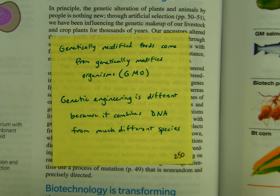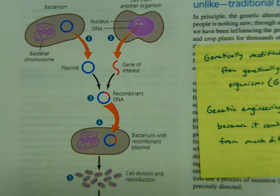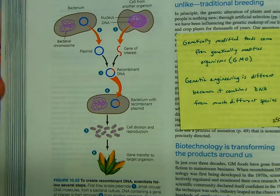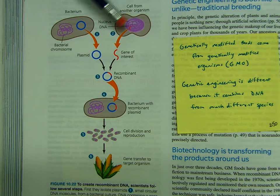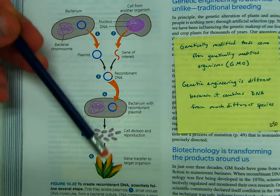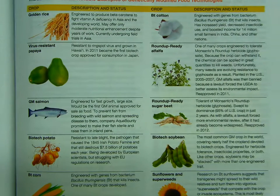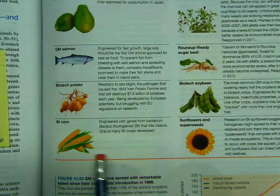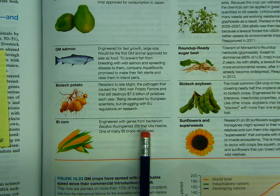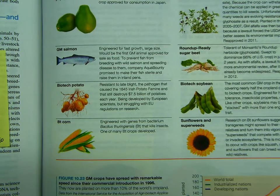Genetic engineering is different because it combines DNA from very different species. For example, in this picture you can see it starts with a bacteria cell and a cell from another organism — you combine everything together into recombinant DNA and now you've got a completely new thing. A lot of what they do makes crops resistant to insects — things like BT cotton and BT corn, which kills insects so you don't need to put as much pesticide on them.